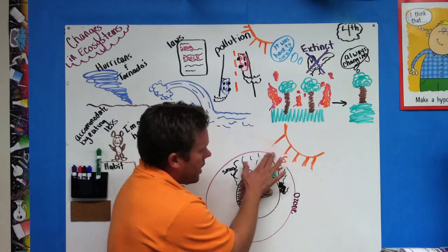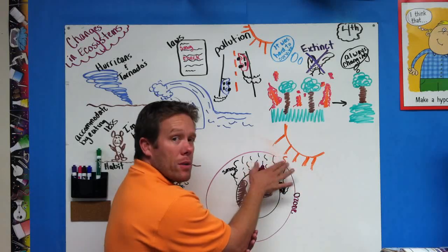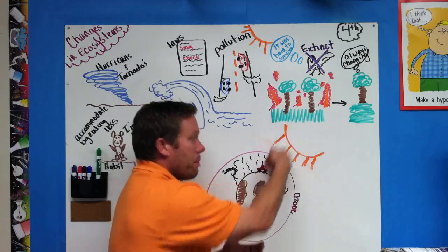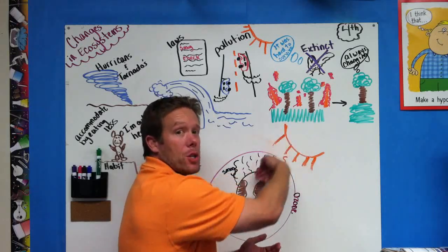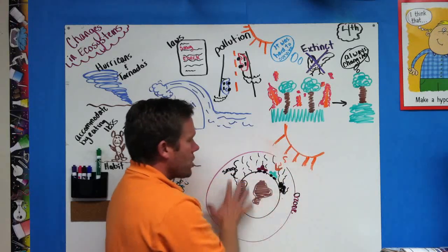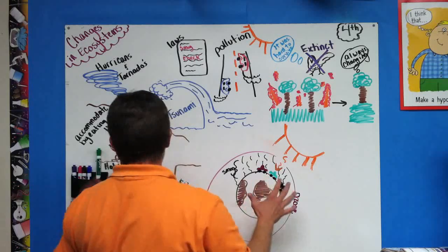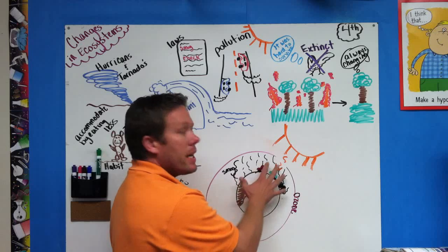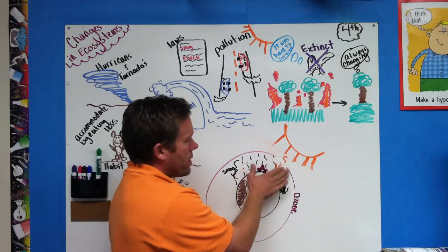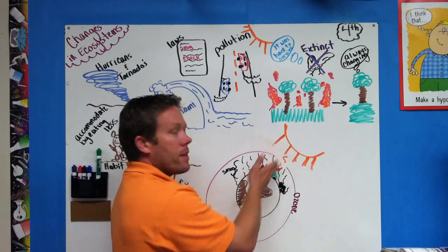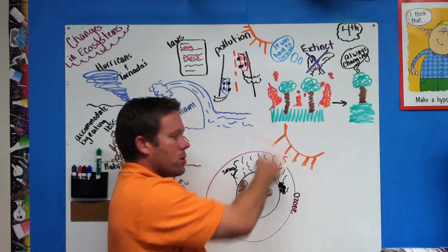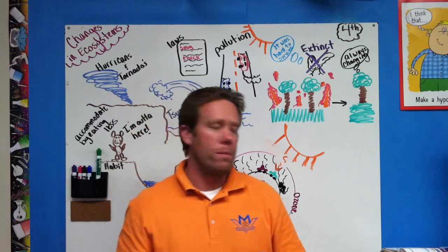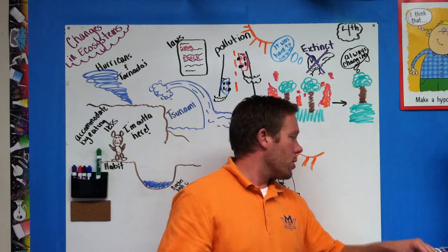Once that ozone becomes worn out from the smog, the solar energy is able to get through that much more and it actually causes earth to be that much hotter. So you can see the cars here giving off the smog that wears out the ozone layer and the solar energy then is able to get more directly to planet earth and so it warms it up faster.